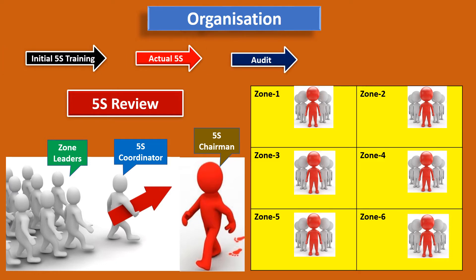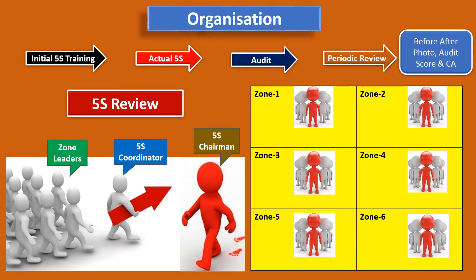Then an audit needs to be done. One zonal head can go to another zone for auditing, and his zone can be audited by a different zone leader. A periodic review should be done where before and after photos are shown. There will be an audit score, and if the score is low, corrective actions need to be taken. In every periodic audit, the next audit date and next review date should be fixed.